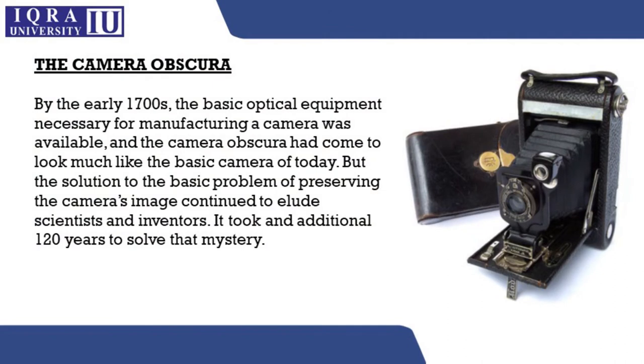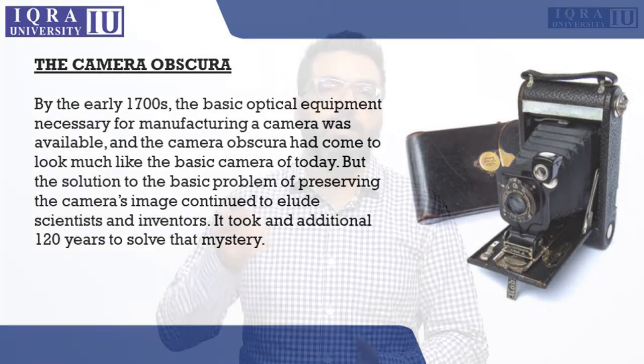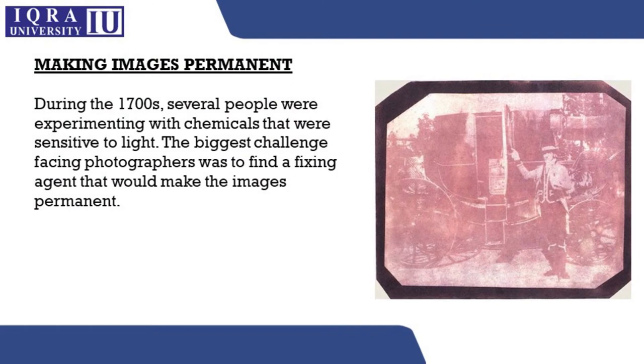It took around 120 years to begin solving the mystery of making the image permanent. In the 1700s, many scientists started to find fixing agents — this was a time when chemistry was booming. Once fixing agents were discovered, people learned to make permanent images on different surfaces: on paper, on glass, on metal, and on wood.